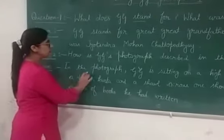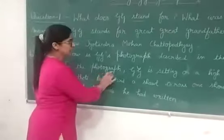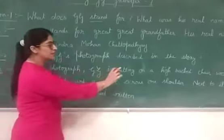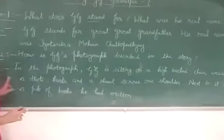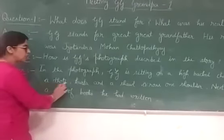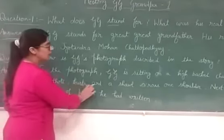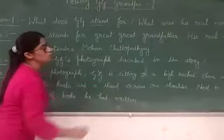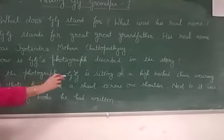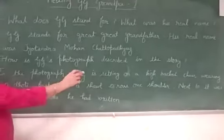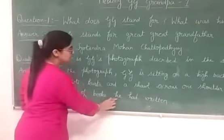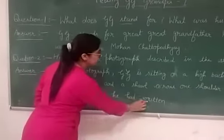To revise: in the photograph, Gigi is sitting on a high-backed chair, wearing dhoti, kurta, and a shawl across one shoulder — over his shoulder. Next to it, means next to the photograph, next to it was a pile of books he had written.